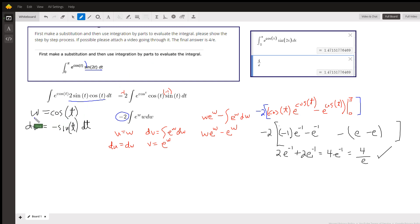Since we're going to use integration by parts using the variables u and v, I'll use w over here for the substitution. Let w equal the cosine of t, then dw equals the negative sine of t dt.